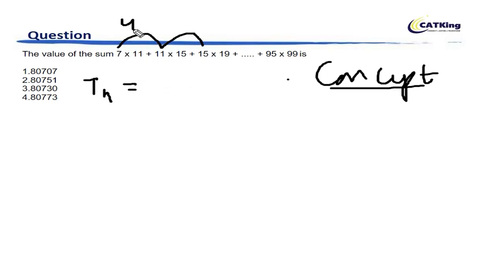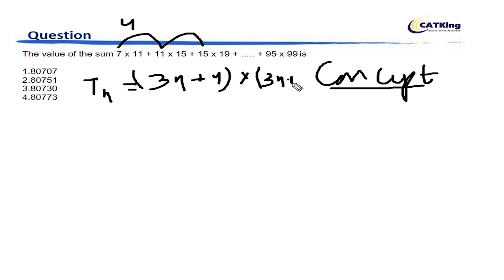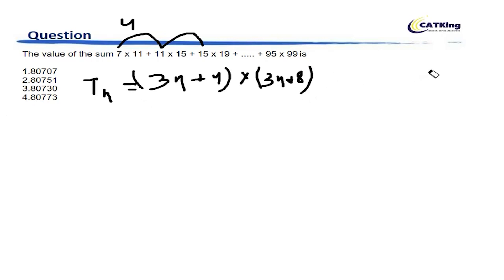The common difference is 4, so the first factor can be written as 3n plus 4, and the general term as (3n+4) into (3n+8). You can test it — if you put n equal to 1, this number becomes 7 and this number becomes 11, giving 7 into 11.